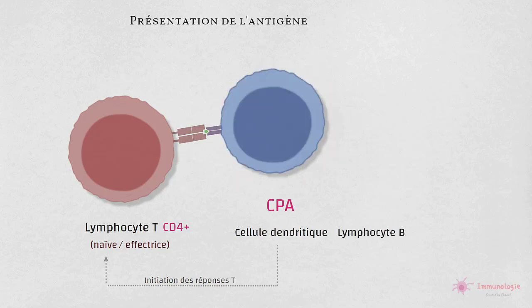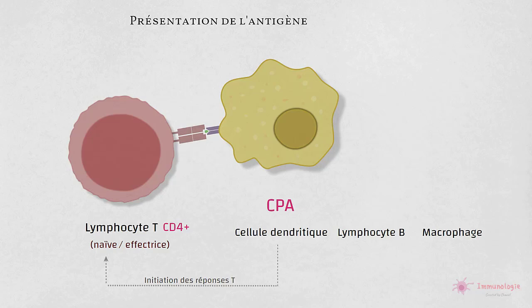Les macrophages et les lymphocytes B fonctionnent également comme des CPA, mais principalement pour les lymphocytes T auxiliaires précédemment activés que pour les lymphocytes T naïves. Ces trois types de cellules sont appelées CPA professionnels. Cependant, ce terme est parfois utilisé pour désigner uniquement les cellules dendritiques en raison de leur rôle unique dans l'activation des T naïves.